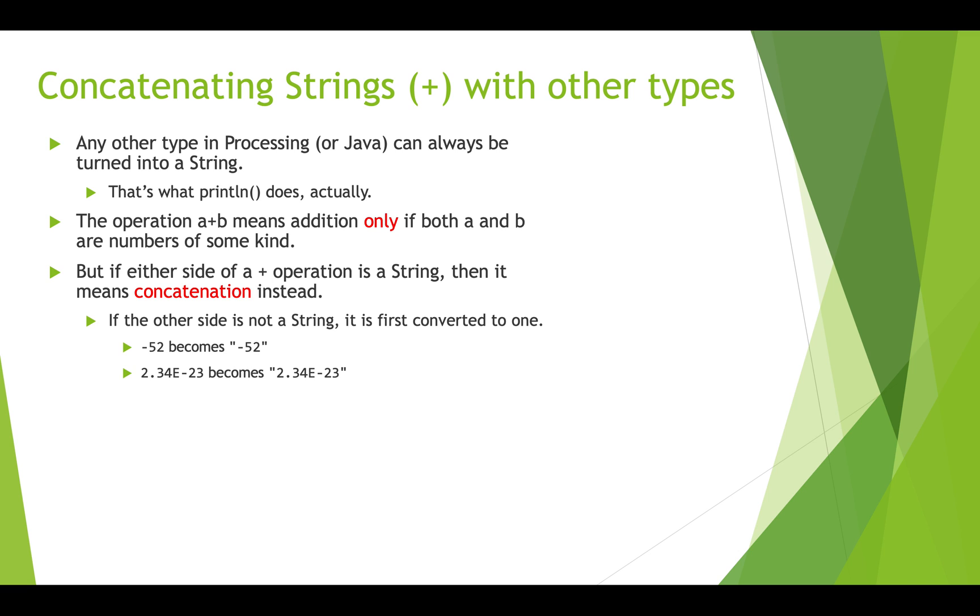Okay, so if the other side is not a string, if it is an integer or a floating point number, it will be converted into a string. So negative 52 becomes the string negative 52. 2.34e to the negative 23 becomes that number, but as a string in quotations. So if we have something like this, string name equals Cindy and int age equals 29, then putting that all together with concatenation gives us Cindy is 29 years old.